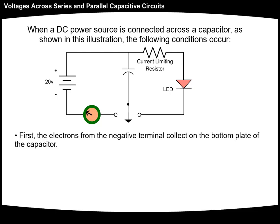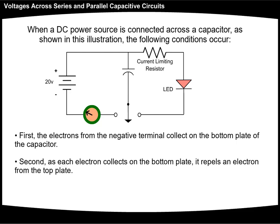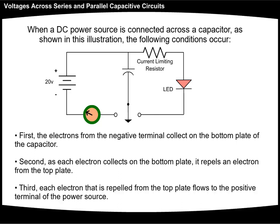First, the electrons from the negative terminal collect on the bottom plate of the capacitor. Second, as each electron collects on the bottom plate, it repels an electron from the top plate. Third, each electron that is repelled from the top plate flows to the positive terminal of the power source.